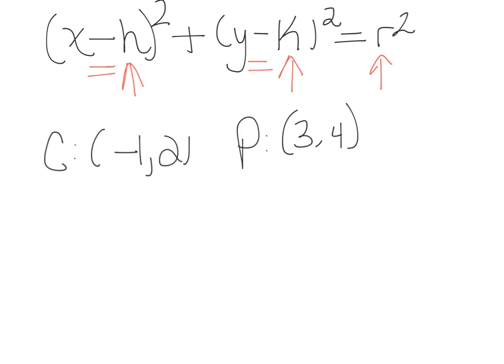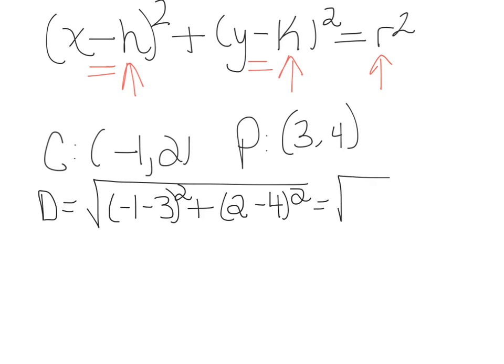So I'm going to do my x1 minus my x2 squared plus my y1 minus my y2 squared. So that's going to get me negative 4 squared is going to be 16 plus 2 squared is going to be 4, so I have a distance of the square root of 20 or 2 root 5 if we want to rationalize it, and that's my radius.